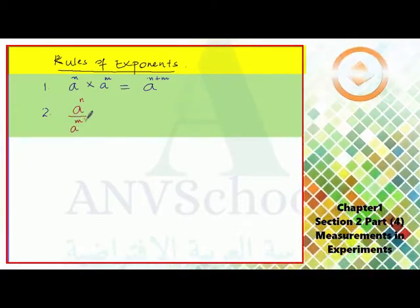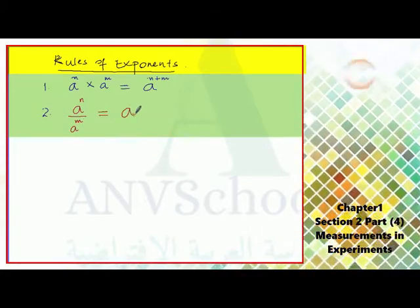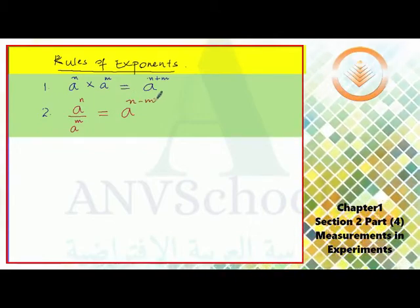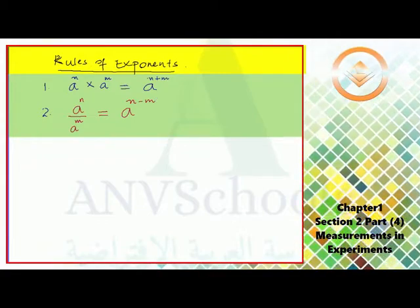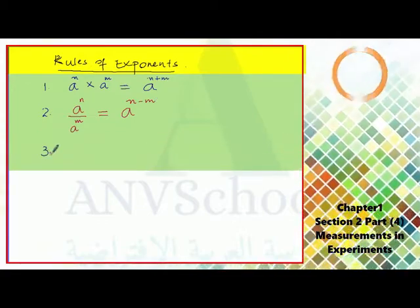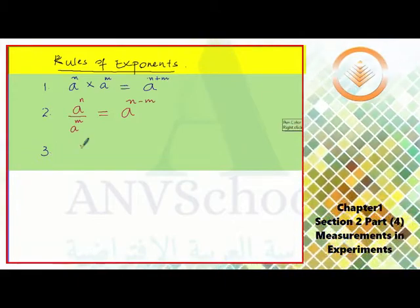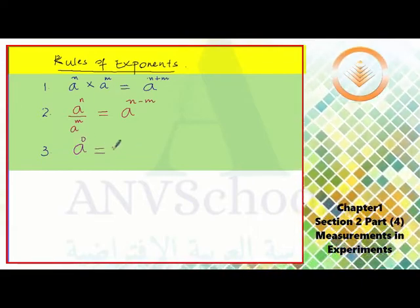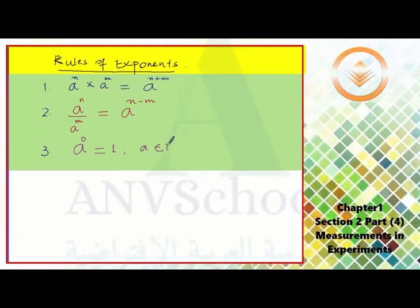This can be written as a raised to n minus m. The third rule is: a to the power of zero is always one for any a that is an element of the real numbers.